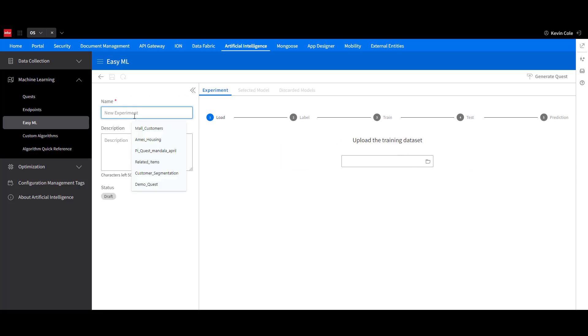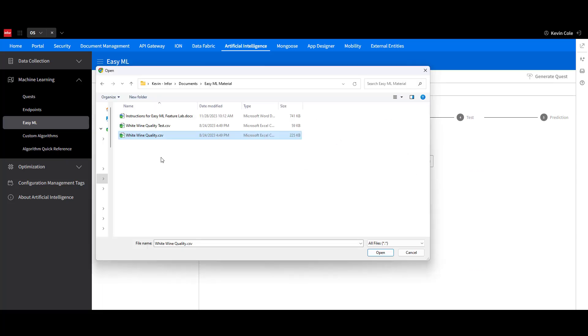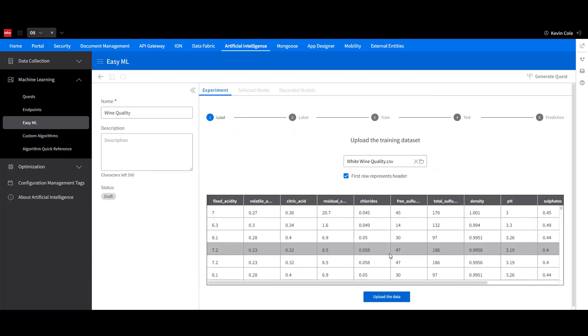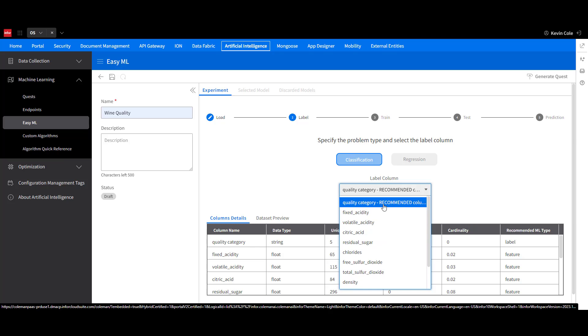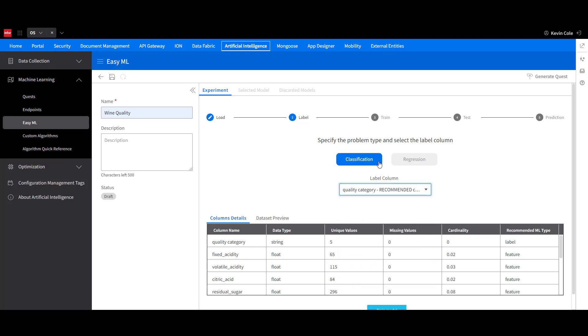I'll give the model a name and select our training data set. A preview of the data set will be shown, and we verify that there is a header here with the names of our features before uploading the data. Now we can tell the model a little bit about what we are trying to do. Here, we select Classification and tell the model what our target label is.